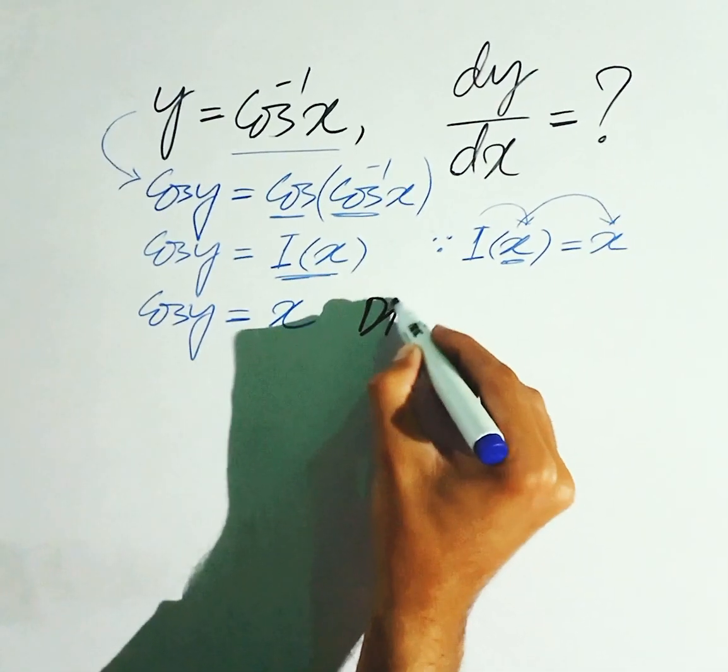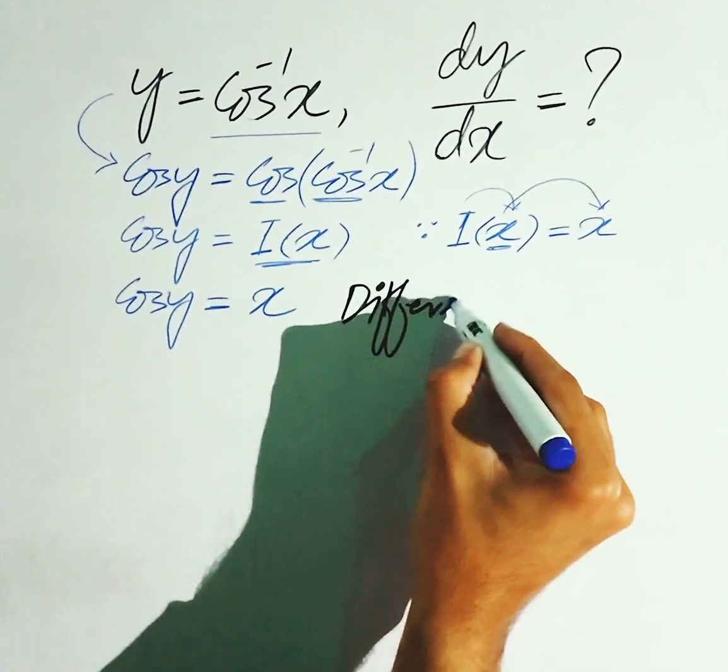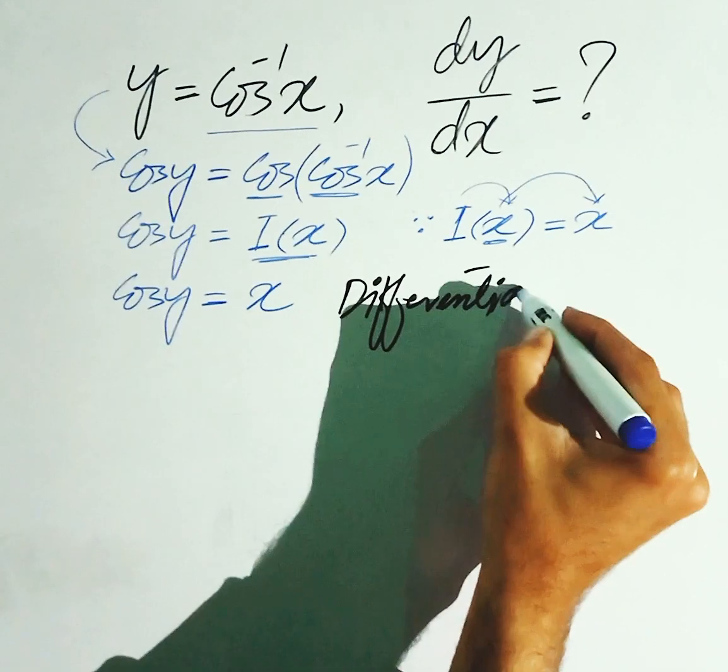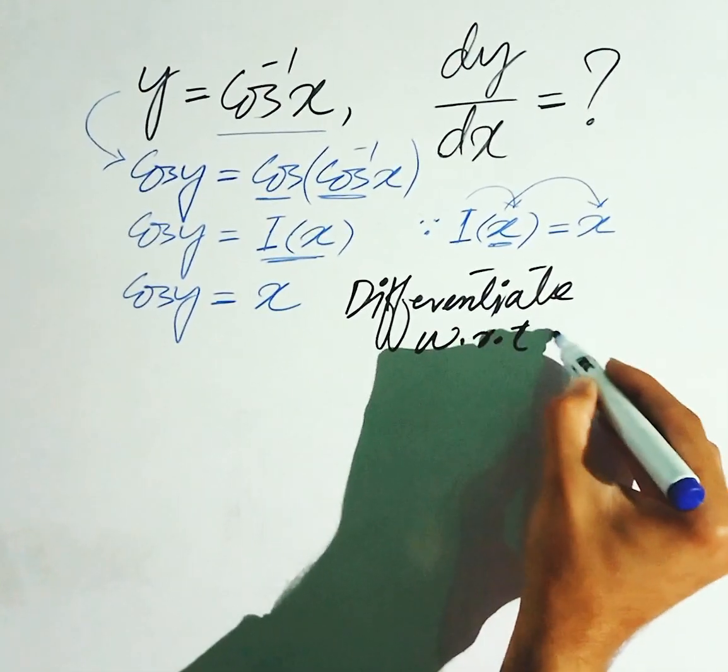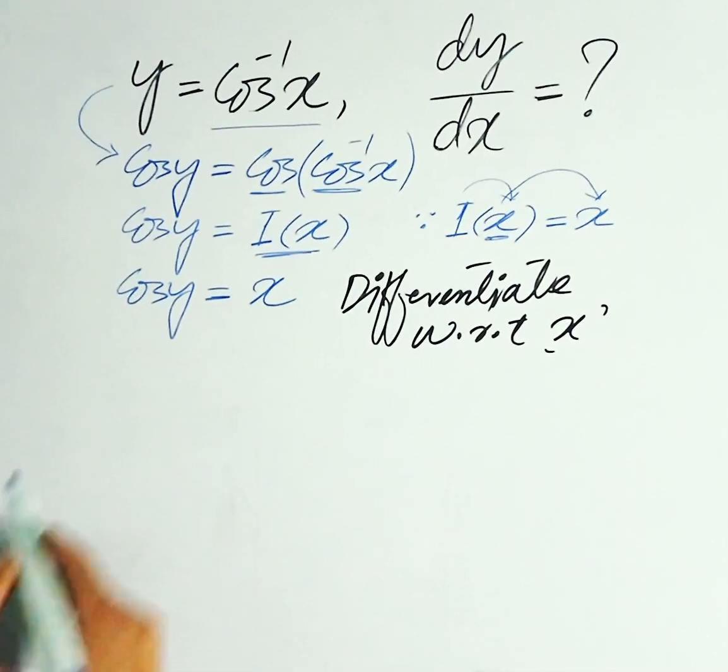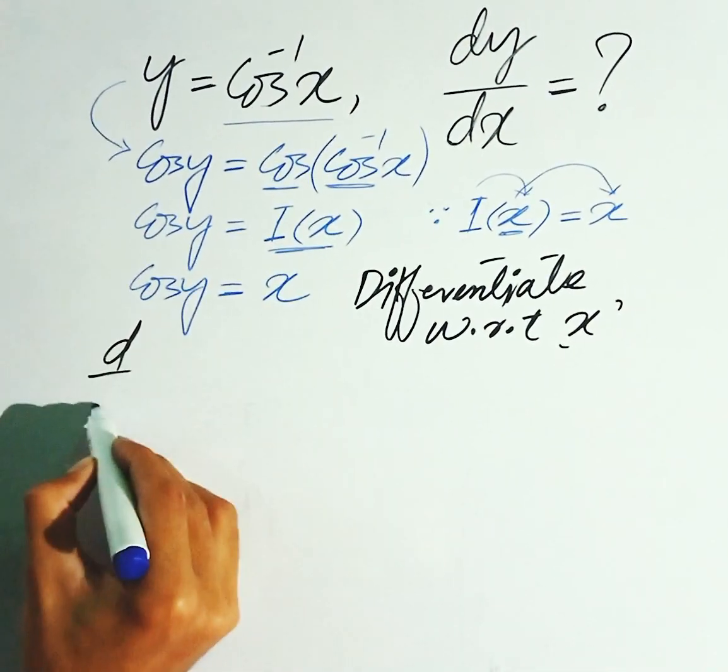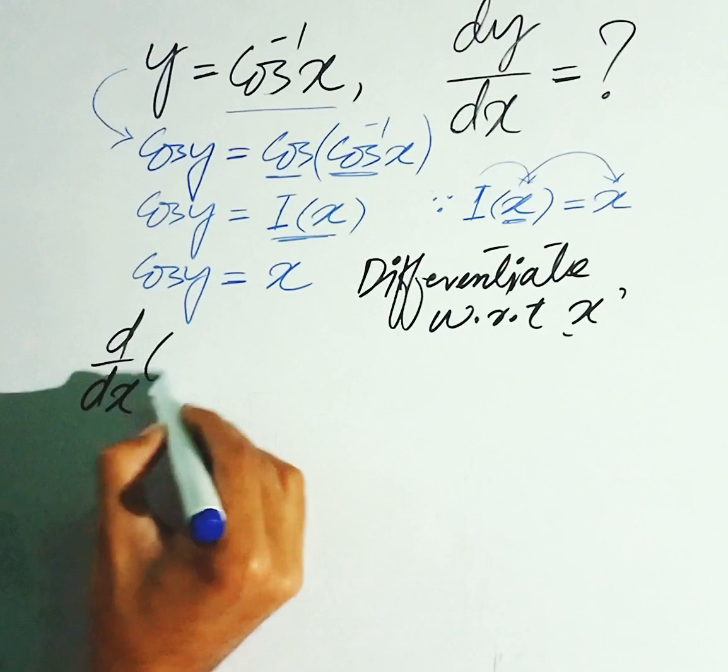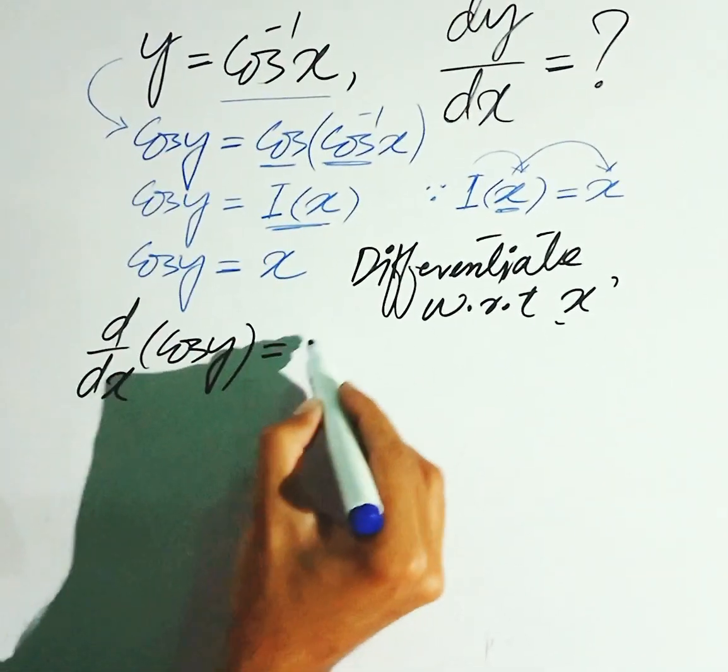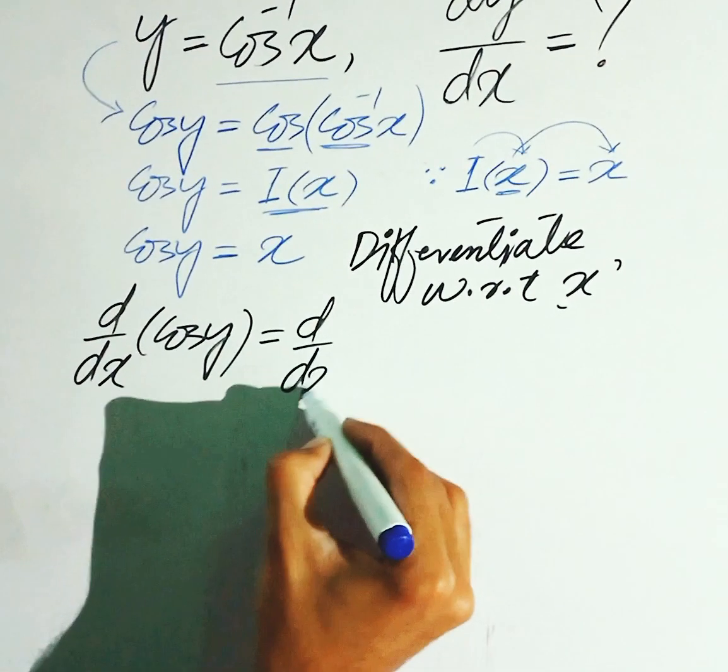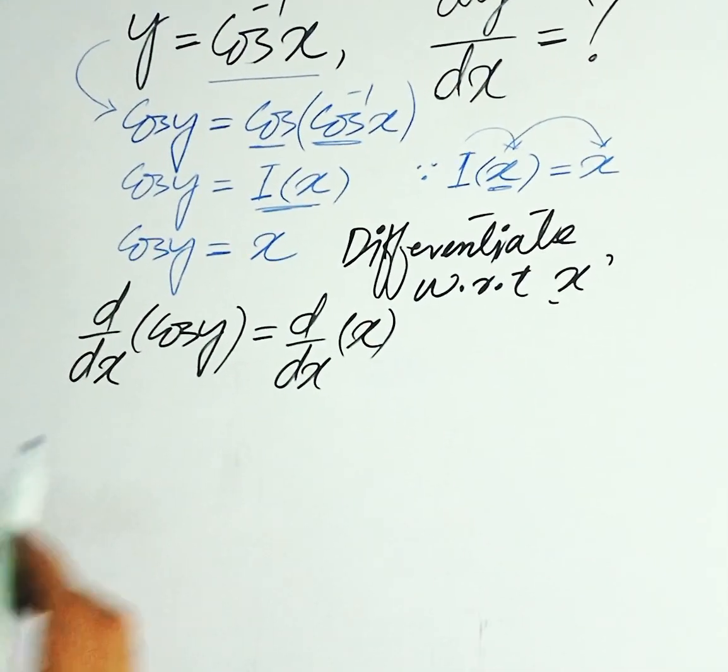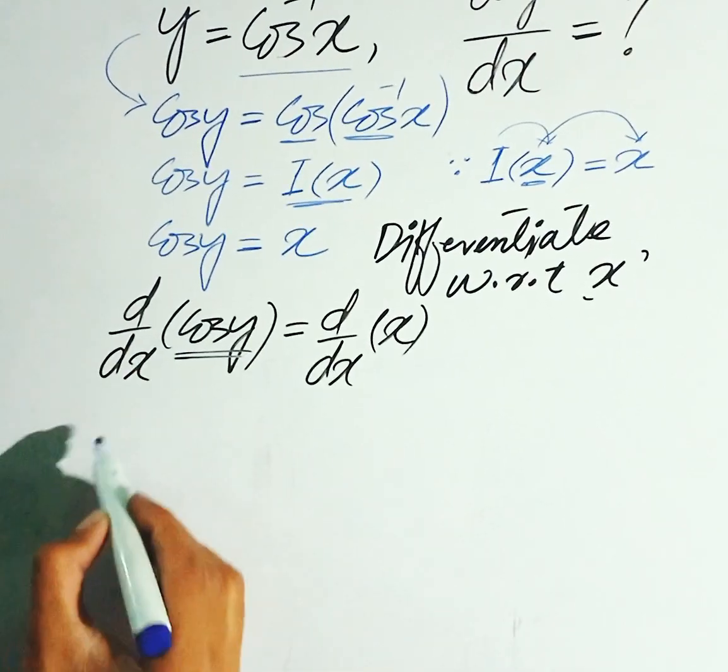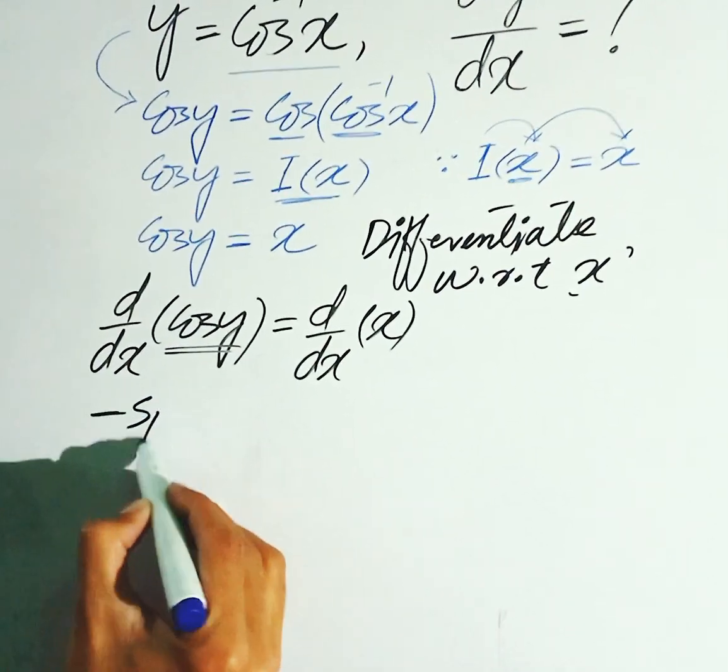Now, differentiate with respect to x. Here, d over dx cos y is equal to d over dx of x. Aur ham jantate hai ki cos y ka jo derivative hoota hai, wo minus sin y aata hai.